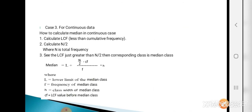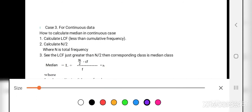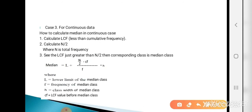Now Case 3 for continuous data. Step 1: calculate LCF. Step 2: calculate N/2 where N is total frequency. Step 3: find the LCF just greater than N/2 — the corresponding class is the median class. The formula is: Median = L + [(N/2 − CF) / F] × H, where L is the lower limit of the median class, F is its frequency, H is the class width, and CF is the LCF before the median class.